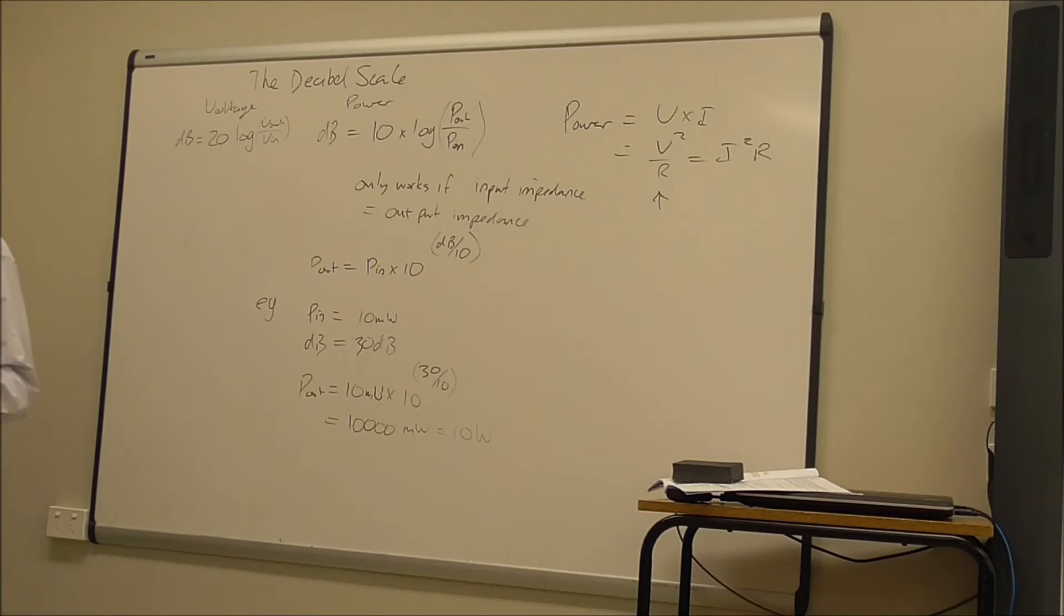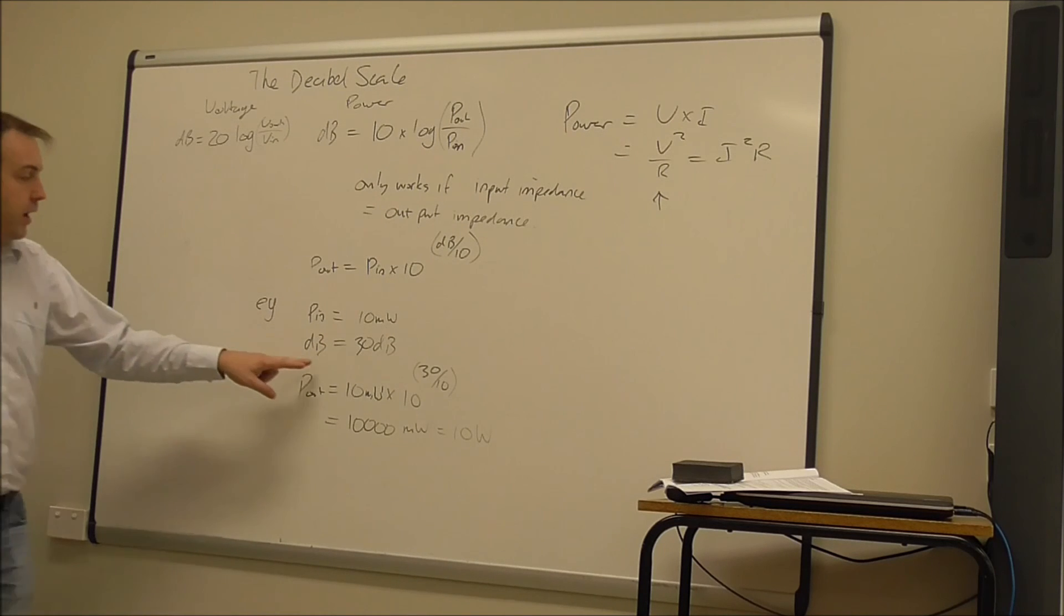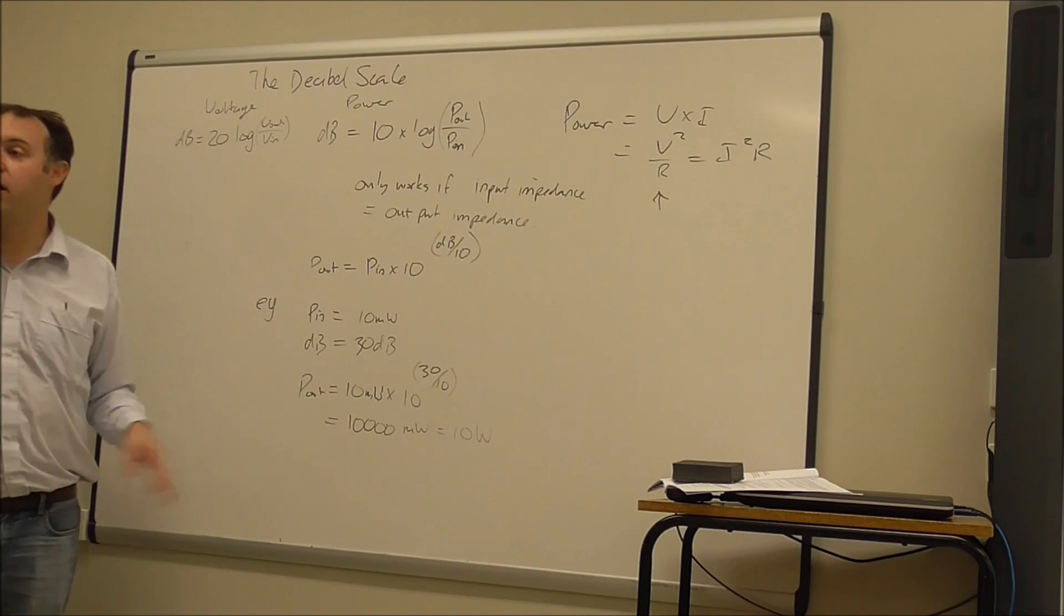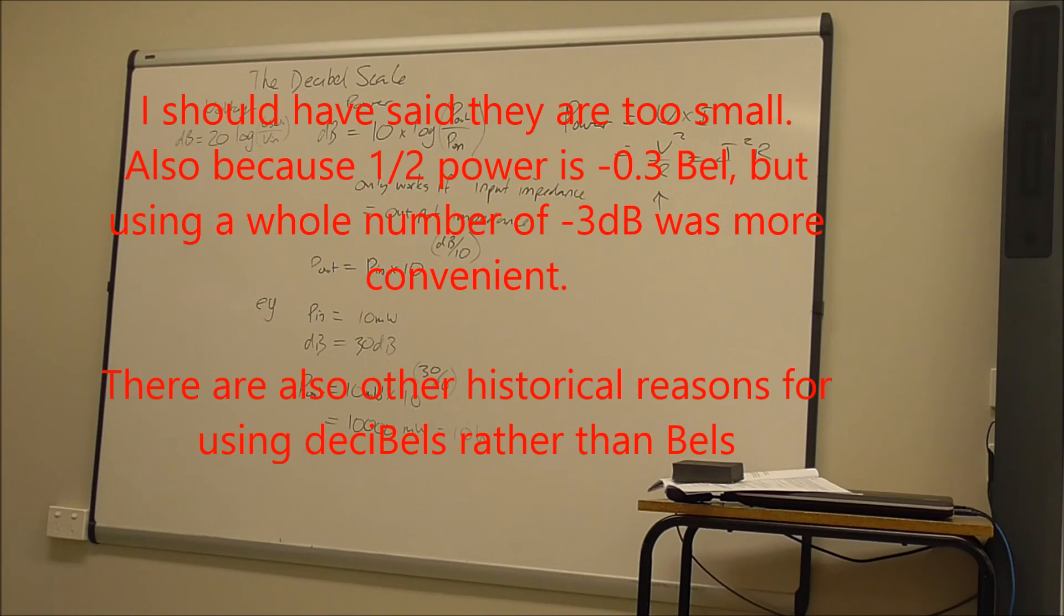And lowercase d for deci. So it's one tenth of a bell. And because we use decibel rather than bells, because bells just becomes a bit unwieldy, the numbers are too big, and so we use decibels instead.